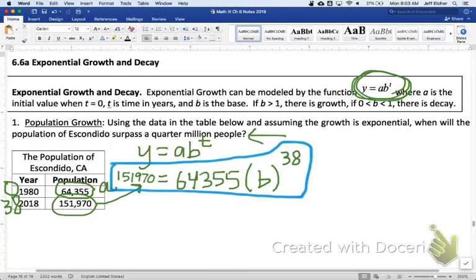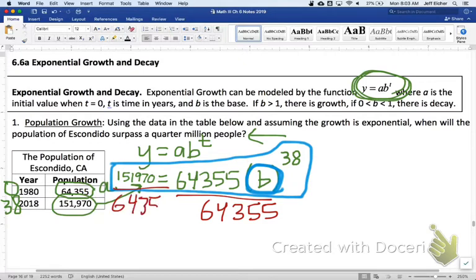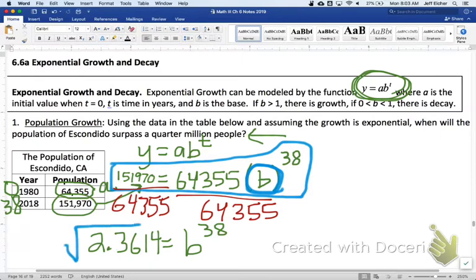So, this is the equation that we solve to find b. And to solve that equation, you're going to isolate b. Here's b right here. Isolate b. So, we're going to divide both sides by 64,355. And we get 2.3614 equals b to the 38. You definitely want to keep that whole decimal in your calculator. And then, you're going to do the 38th root of both sides.